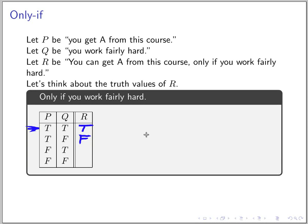In the third case, you do not get an A but you work fairly hard. R says you can get an A only if you work fairly hard, but it doesn't say that if you work hard you get an A — so this is consistent and R is true. Finally, you don't get an A and you don't work hard — the statement says nothing about this case, so R is true as well.